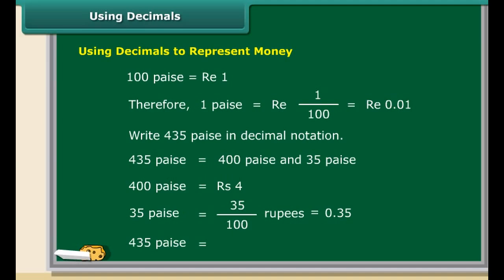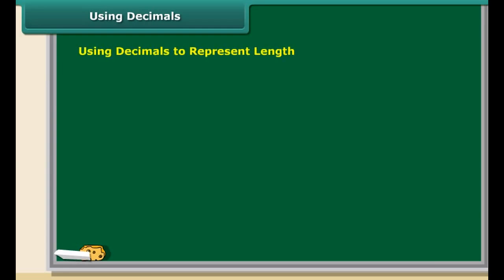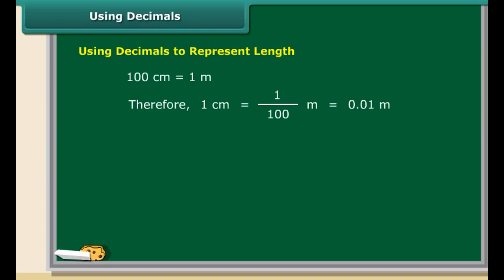Similarly, length can also be expressed in decimals. We know that 100 centimeters are equal to 1 meter, which means 1 centimeter is equal to one hundredth of a meter. Let us use decimal notation to write 925 centimeters.